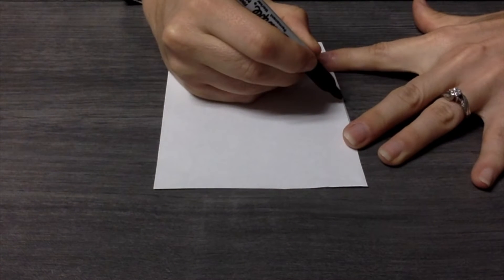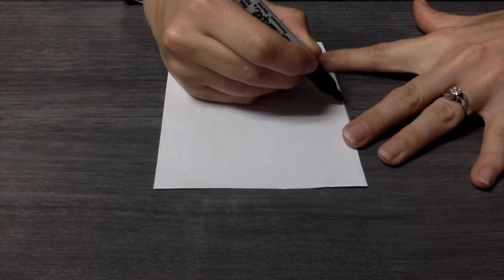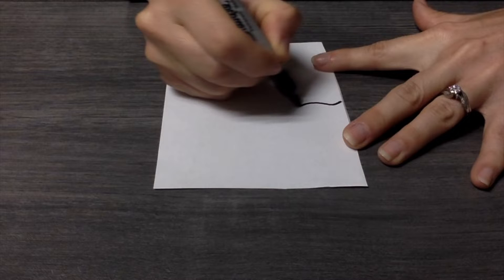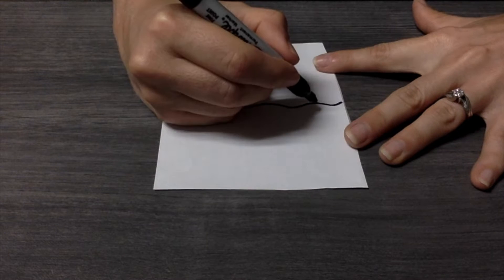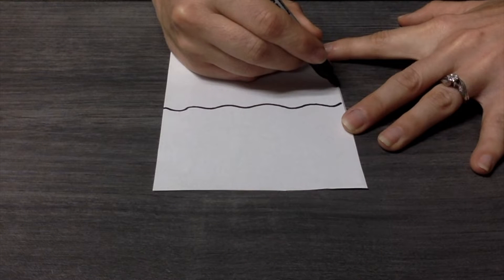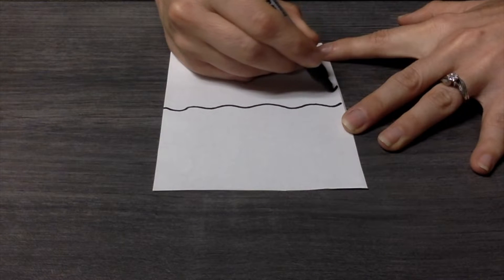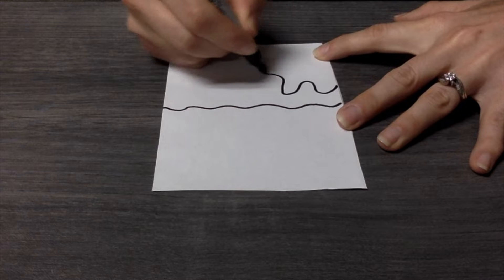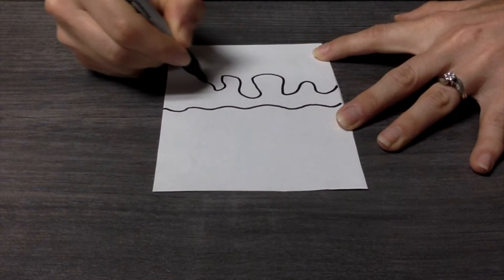The first landscape we are going to draw is the desert. We are going to start with a wavy line in the middle. We are going to add another wavy line. This time you can go a little crazy with it.